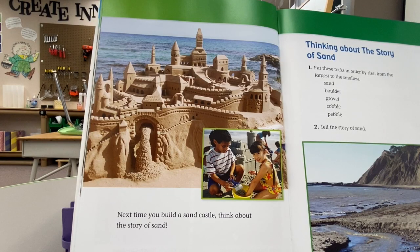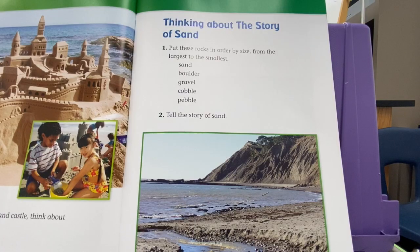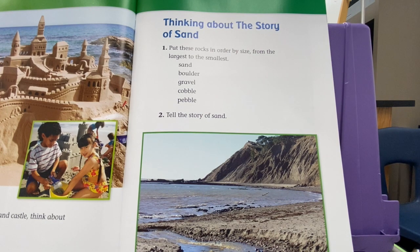Next time you build a sand castle, think about the story of sand. Thinking about the story of sand, put these rocks in order by size from the largest to the smallest. You have sand, boulders, gravel, cobble, and pebbles. Tell the story of sand.